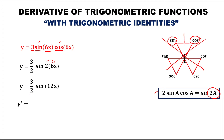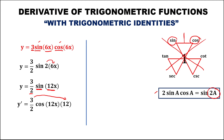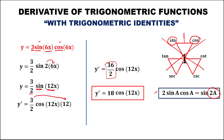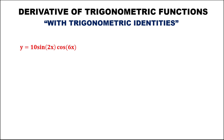Now finding the derivative: bring down 3 over 2, times the derivative of sine, which is cosine, times the derivative of 12x, which is 12. Simplifying, 3 times 12 is 36, over 2, times cosine 12x. Reducing 36 over 2 gives 18. So y prime equals 18 cosine 12x.